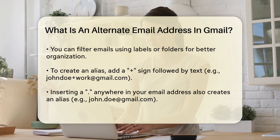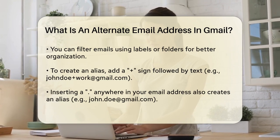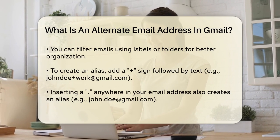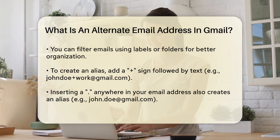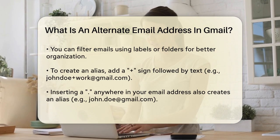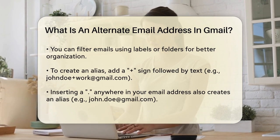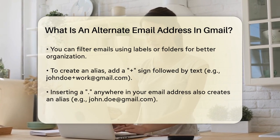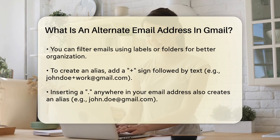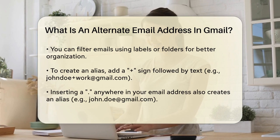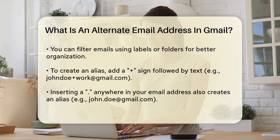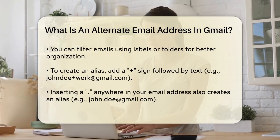To create an email alias, you can follow some simple steps. For personal Gmail accounts, you can add a plus sign and any text after your email address, like john.doe+work@gmail.com, and it will still reach your main inbox. You can also insert a dot anywhere in your email address, so john.doe@gmail.com is treated as an alias for johndoe@gmail.com.